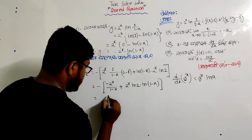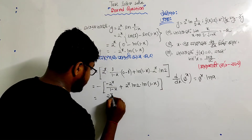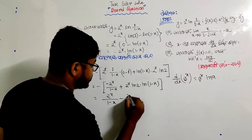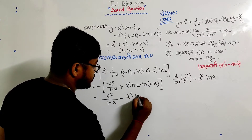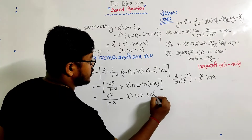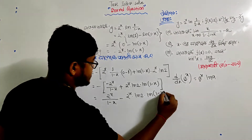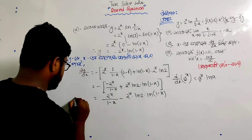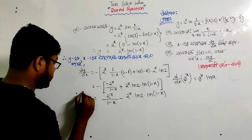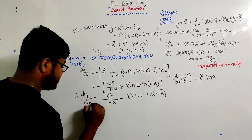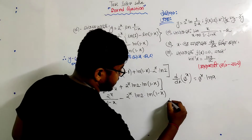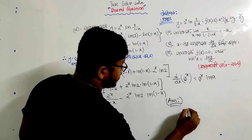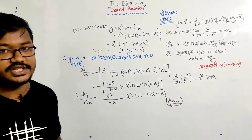So dy/dx equals 2 to the power x into ln 2 into ln of 1 minus x, plus 2 to the power x divided by 1 minus x, minus 2 to the power x into ln 2 into ln of 1 minus x.